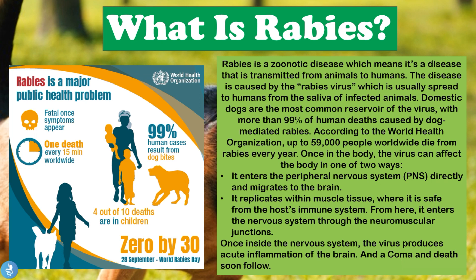Once in the body, the virus can affect the body in one of two ways. Firstly, it can enter the peripheral nervous system directly and migrate to the brain, or secondly, it can replicate within the muscle tissue where it is safe from the host immune system, and from here it can enter the nervous system through the neuromuscular junctions. The main concern with rabies is that once it's inside the nervous system, the virus produces acute inflammation of the brain, and a coma and death soon follow.